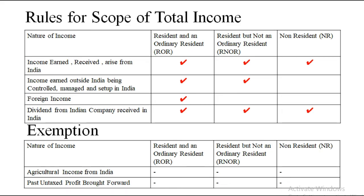There is also a new rule: dividend from an Indian company, if received in India, will be chargeable to all three categories. Prior to this it was exempted but now it is completely chargeable. Two exemptions to keep in mind: agricultural income from India — no one pays tax; and past untaxed profit which is brought forward — again no one pays tax. Those are all the rules that need to be kept in mind.